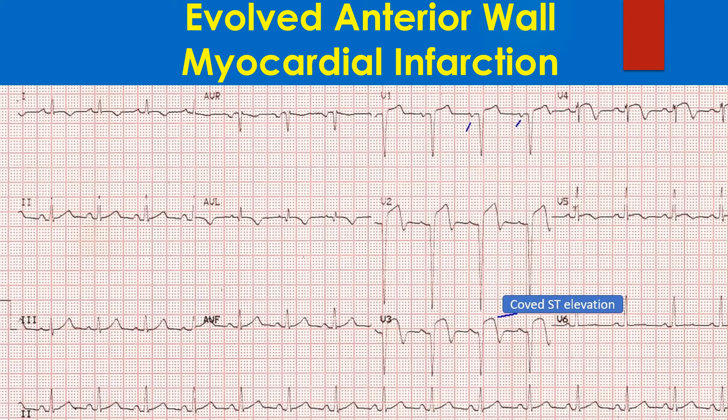P waves in V1 are prominently negative, indicating possible left atrial overload, also known as left atrial abnormality. Left atrial overload would indicate left ventricular dysfunction. QRS axis is normal, suggesting the absence of any hemi block.